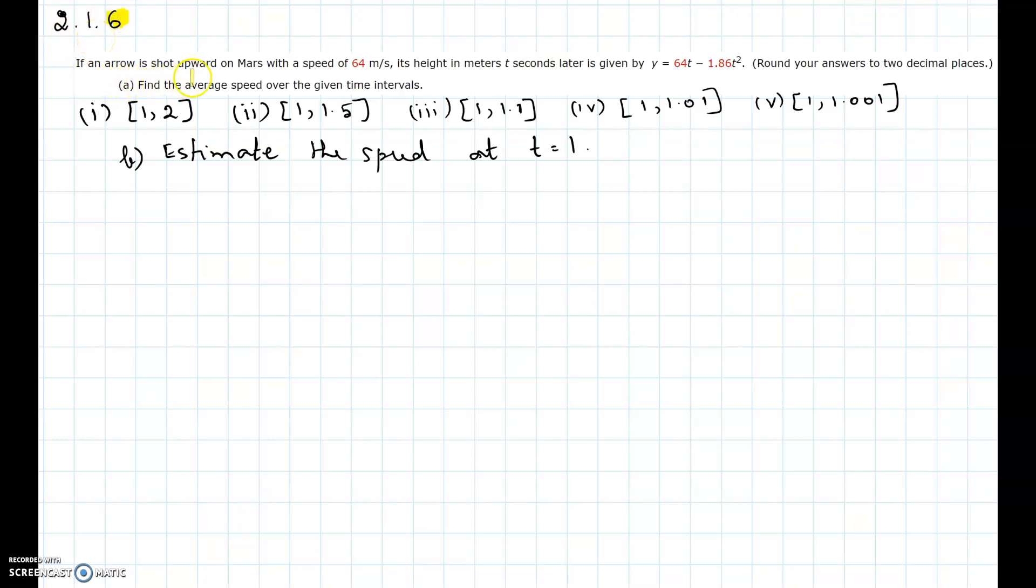If an arrow is shot upward on Mars with a speed of 64 meters per second, its height in meters t seconds later is given by y equals 64t minus 1.86t squared.